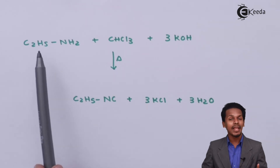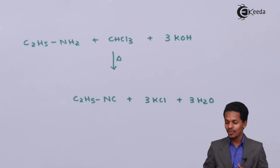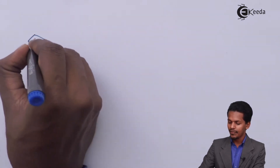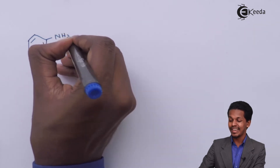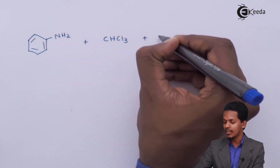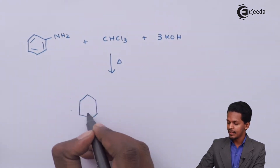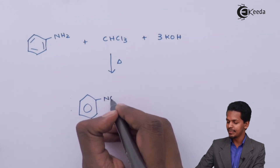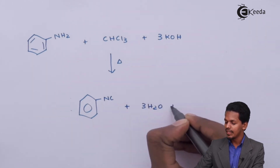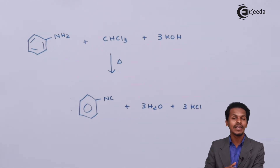That was the reaction of an aliphatic amine. Now let us consider the reaction of an aromatic primary amine with chloroform and KOH. Suppose we take aniline (C₆H₅NH₂) and react it with CHCl₃ and 3 moles of KOH. After heating, the main product obtained is phenyl isocyanide (C₆H₅NC), with byproducts of 3 moles of H₂O and 3 moles of KCl. This product is known as phenyl isocyanide.